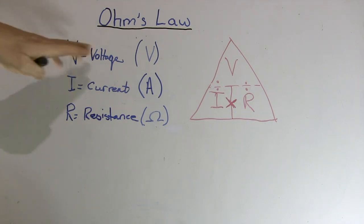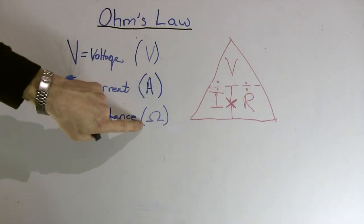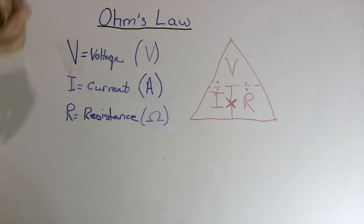So we have voltage, which we measure in volts; current, which we measure in amps; and resistance, which we measure in ohms. Hence the name Ohm's Law.